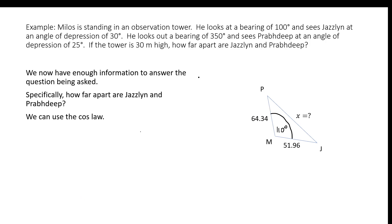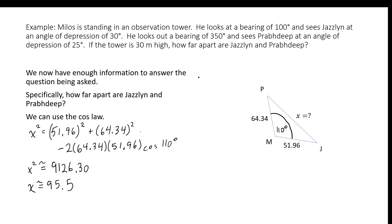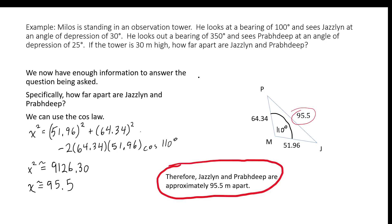We used those vertical triangles to find information about the horizontal triangle. Now we can discard the vertical triangles and solve for x using the cosine law. x squared equals 51.96 squared plus 64.34 squared minus 2 times 51.96 times 64.34 times the cosine of 110 degrees. Ultimately, x is roughly 95.5. We can say that Jazlin and Prabhdeep are approximately 95.5 meters apart.